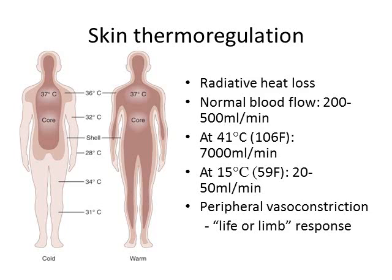Your normal blood flow is 200 to 500 mls per minute. When your body is hot at 41 degrees Celsius, this flow increases to 7000 milliliters per minute. When you are cold, the vessels to your skin and periphery constrict to limit radiative heat loss. At a body temperature of 15 degrees Celsius, blood flow decreases to 20 to 50 mls per minute. This traps heat at the core to keep vital organs warm, also known as the life or limb response.